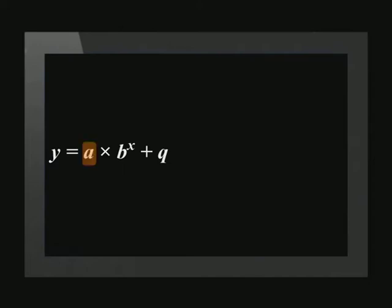a is the constant which determines whether the graph lies above or below the asymptote. The value of b determines the direction in which the graph curves. q is the vertical shift and gives us the value of the horizontal asymptote.